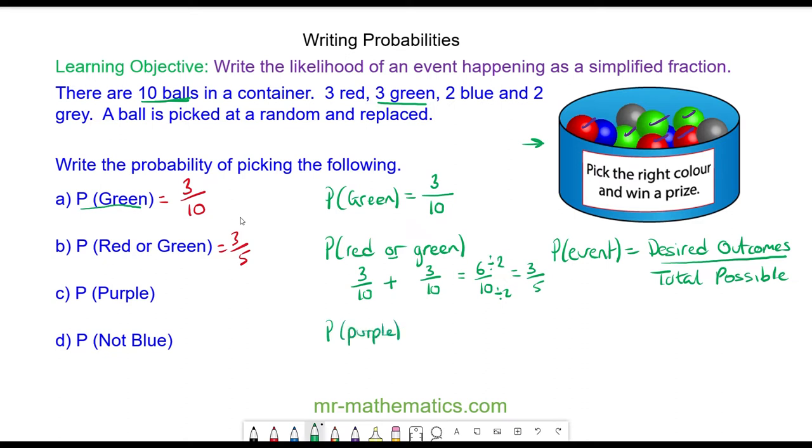The probability of choosing a purple ball at random. Well, the number of desired outcomes now is 0 because there are no purple balls. There are still 10 total possible outcomes, so the probability is 0. This means it is impossible to choose a purple ball.